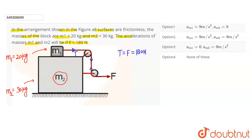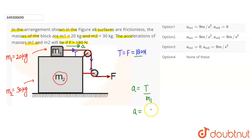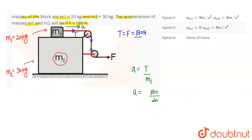The force value is 180 N. We were asked for the acceleration of both blocks. On block m1, one tension force is acting, so it will accelerate in that direction. The acceleration of m1 equals tension divided by mass m1. The tension equals the force, which is 180 N divided by m1 = 20 kg, giving acceleration a1 = 9 m/s² in the horizontal direction.